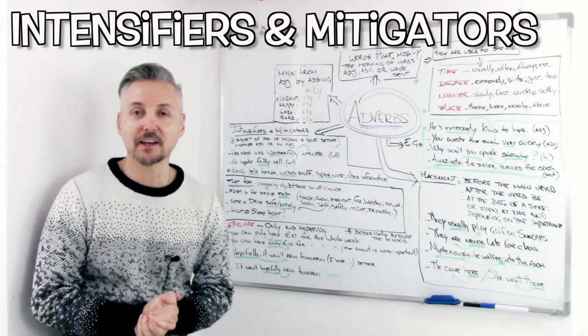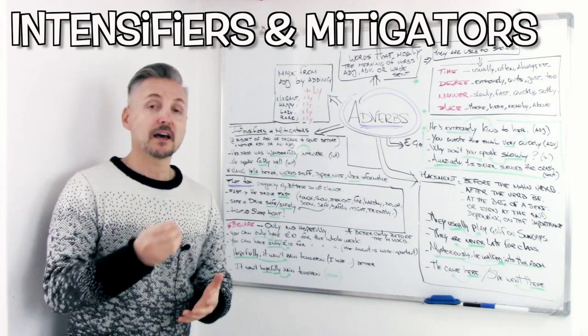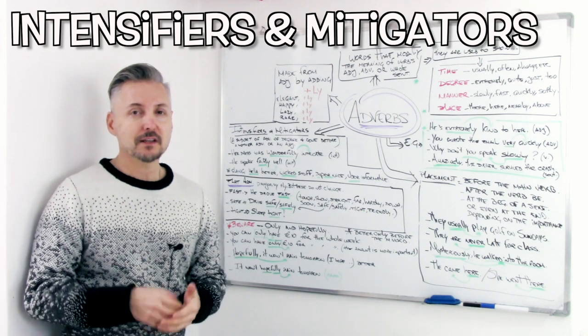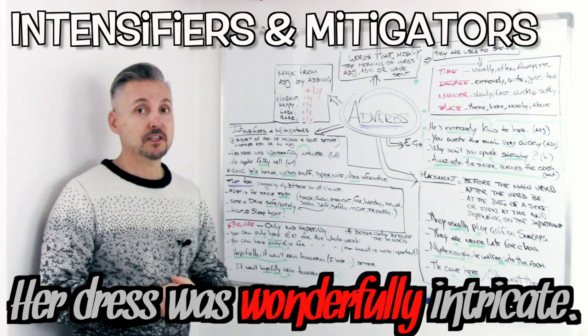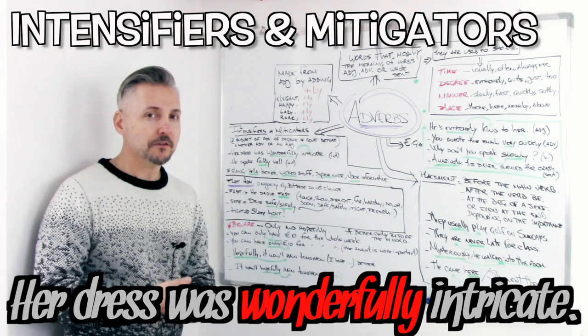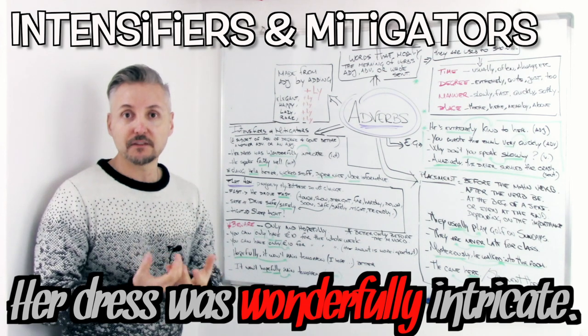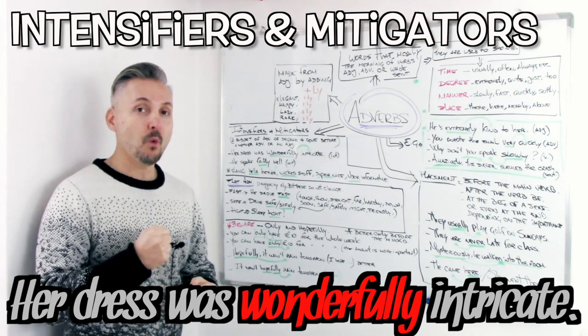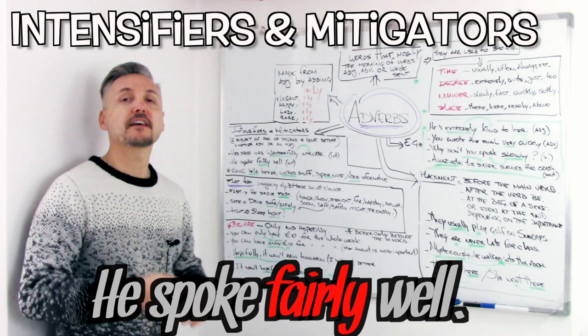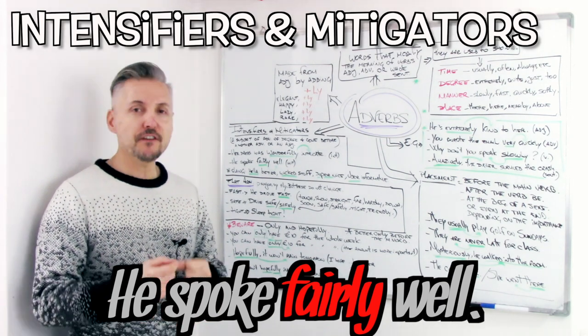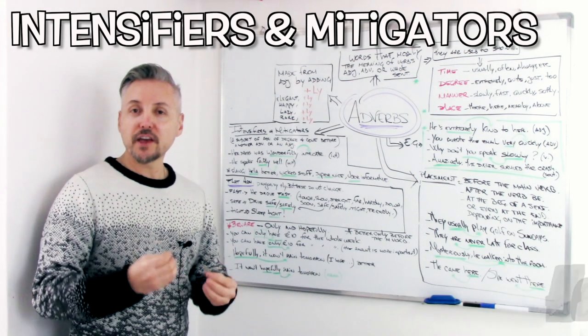Now let's talk about intensifiers and mitigators. What are they? They are a subgroup of adverbs of degree. And they modify adjectives or other adverbs. Just like my example. Her dress was wonderfully intricate. Intricate is the adjective. And wonderfully is an intensifier. It intensifies the adjective intricate. Wonderfully intricate. Now, let's take a look at a mitigator. He spoke fairly well. He spoke fairly well. Well is the... Yes. The adverb. Fairly is the mitigator.